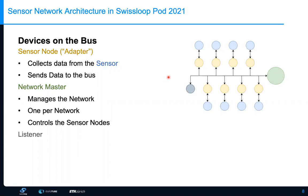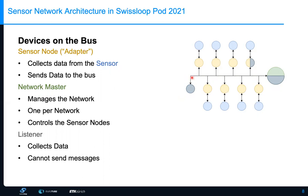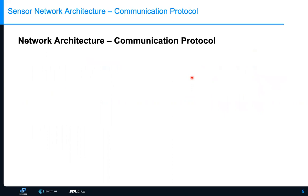A third role is the listener, which collects data sent on the bus without sending any messages. Nodes can also have multiple roles — a network master can also be a listener, which is typically the case since the master needs to collect data. In a typical application, the vehicle controller is both the network master and a listener. In the Swiss Loop case, we also have a second listener — the inverter — because it needs velocity and position data to control the motor accordingly.